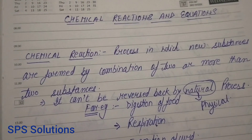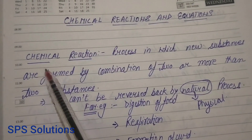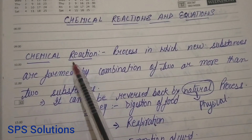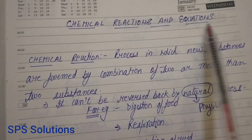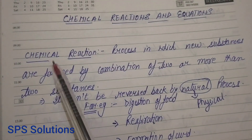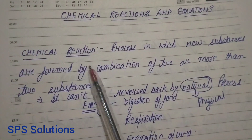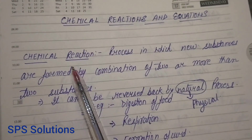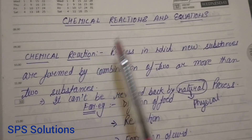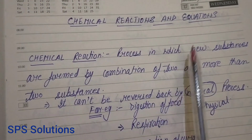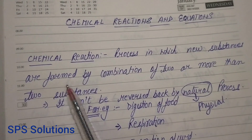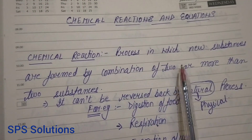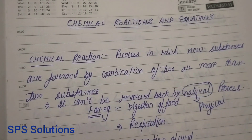In this chapter, the first topic is chemical reactions. The definition of chemical reaction: the meaning of chemical reaction is that process in which new substances are formed by the chemical combination of two or more than two substances.